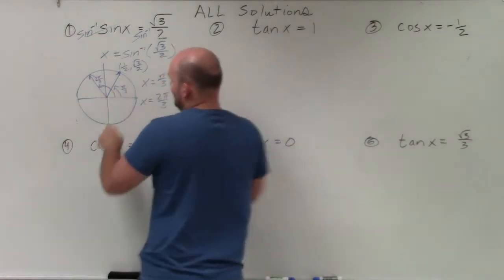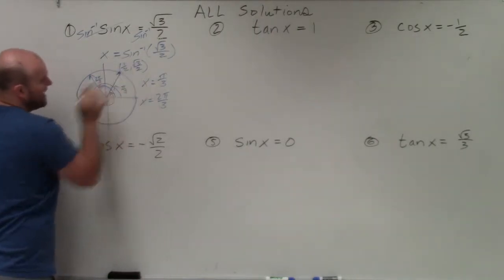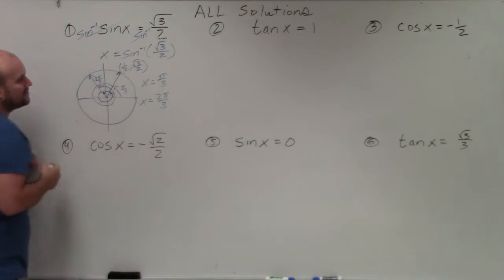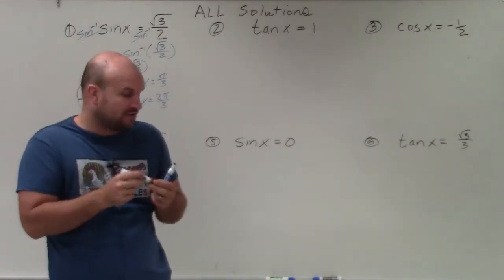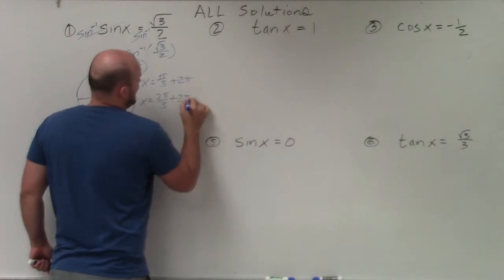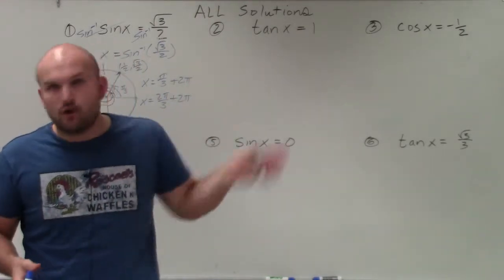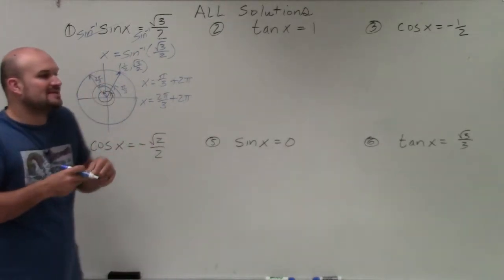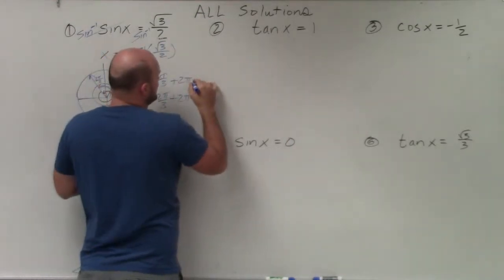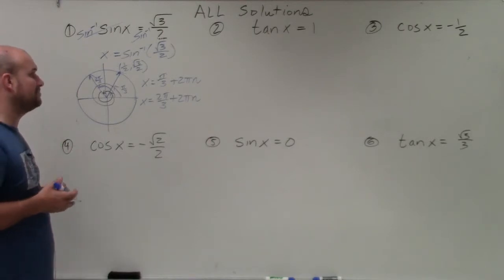If I take pi over 3 and add 2 pi, I come right back to the exact same angle, crossing the same point. The same happens with 2 pi over 3 plus 2 pi. So we must include coterminal angles when finding all solutions. Since coterminal angles are infinite unless restricted, we use the variable n to represent how many times we add 2 pi. Our solutions are x equals pi over 3 plus 2 pi n, and x equals 2 pi over 3 plus 2 pi n.